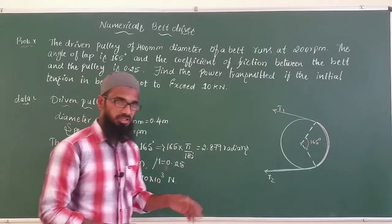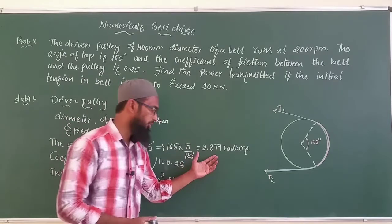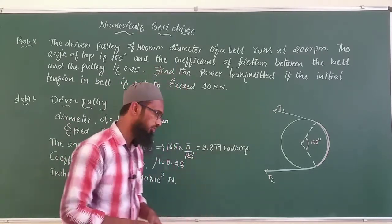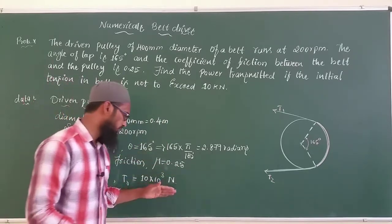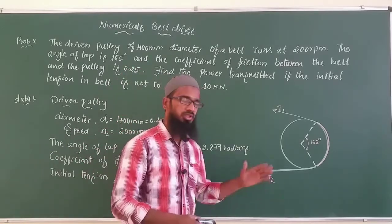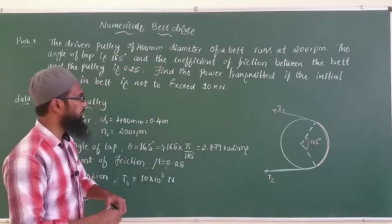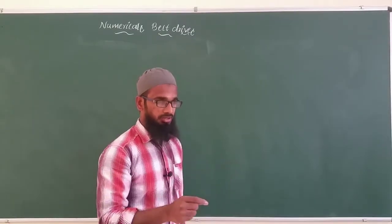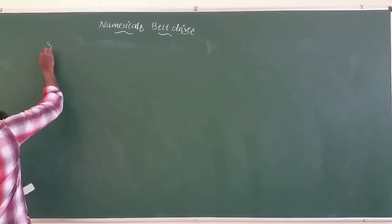The angle of lap is 165°, converted to radians by multiplying by π/180, giving 2.879 radians. The coefficient of friction between the belt and pulley is μ = 0.25. The initial tension in the belt is a maximum of 10 kilo-newtons. We need to find the power transmitted by this belt drive system.